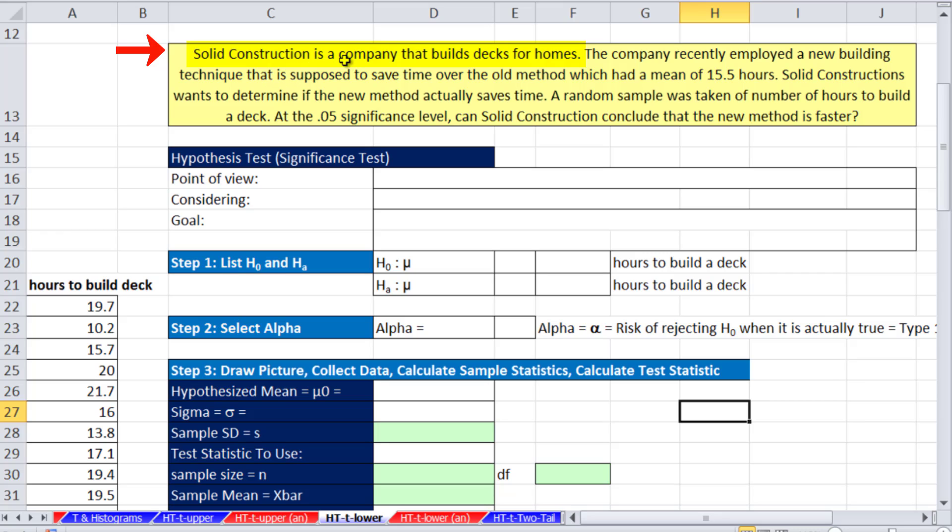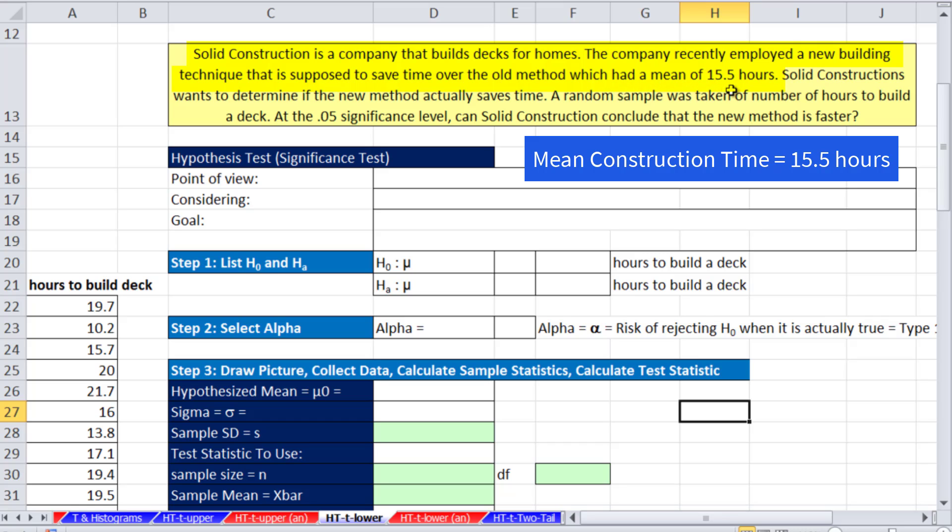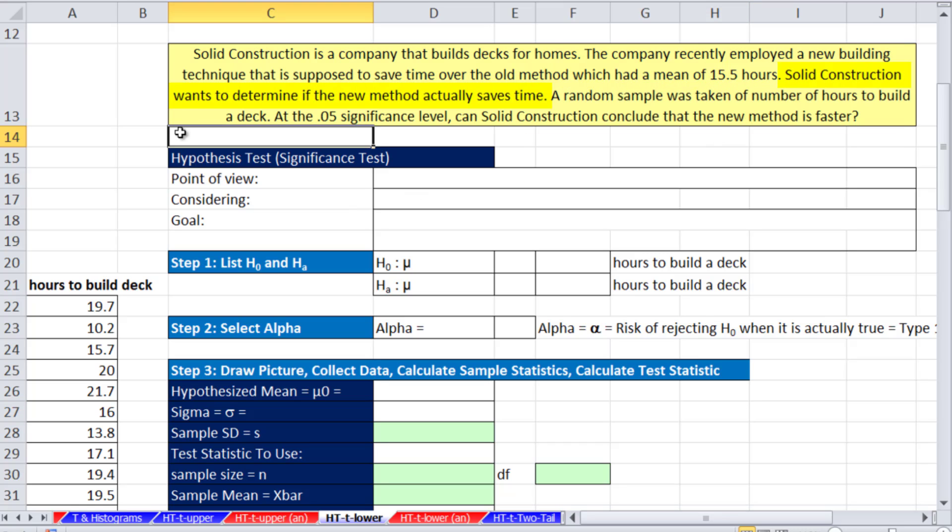Solid Construction is a company that builds decks for homes. The company recently employed a new building technique that is supposed to save time over the old method, which had a mean of 15.5 hours.